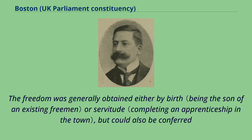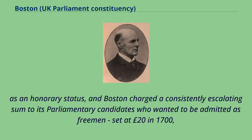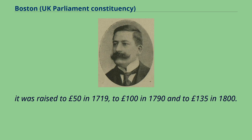The freedom was generally obtained either by birth or servitude, but could also be conferred as an honorary status. Boston charged a consistently escalating sum to its parliamentary candidates who wanted to be admitted as freemen, set at 20 pounds in 1700. It was raised to 50 pounds in 1719, to 100 pounds in 1790, and to 135 pounds in 1800.